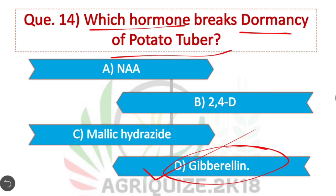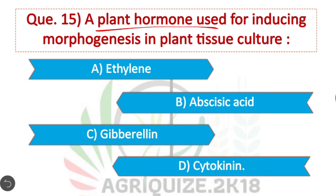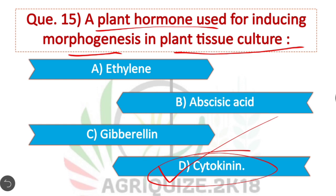Question 15: Which plant hormone is used for inducing morphogenesis in plant tissue culture? Option D is correct. Cytokinin is used for inducing morphogenesis in plant tissue culture.